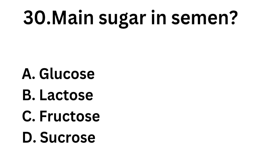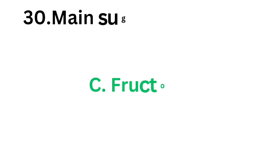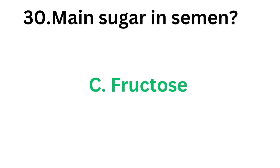Question number 30: What is the main sugar in semen? Option A: Glucose. Option B: Lactose. Option C: Fructose. Option D: Sucrose. The correct answer is Option C: Fructose. The main sugar in semen is fructose.